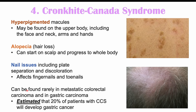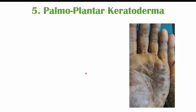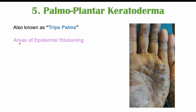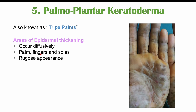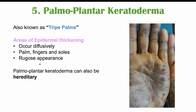It's very important to look for hyperpigmented macules, alopecia, and nail issues. The last skin manifestation we're going to talk about is palmoplantar keratoderma, also known as tripe palms. This is where there are areas of epidermal thickening occurring diffusely, but we can often see it on the palms of the hands — the characteristic area — as well as the fingers and soles of the feet. There's a rugose appearance, so it can often have a very wrinkled look to it. Palmoplantar keratoderma can also be hereditary, and it's associated with acanthosis nigricans. It is also a potential paraneoplastic syndrome of different types of cancer, including gastric cancer, although it's a rare finding.